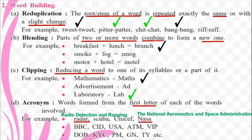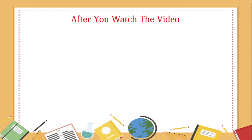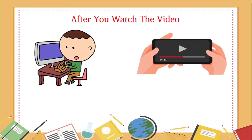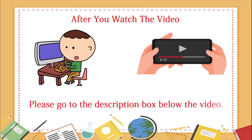Children, we have just completed Part 2 of the video related to the lesson Stephen Hawking. We revised quickly about the life of Stephen Hawking, did some exercises in grammar, and some interesting exercises in word building and vocabulary. These two videos together cover Lesson number 3.3 in your English textbook. Now, after you watch the video, you will have to complete a few simple tasks. Please go to the description box below the video.